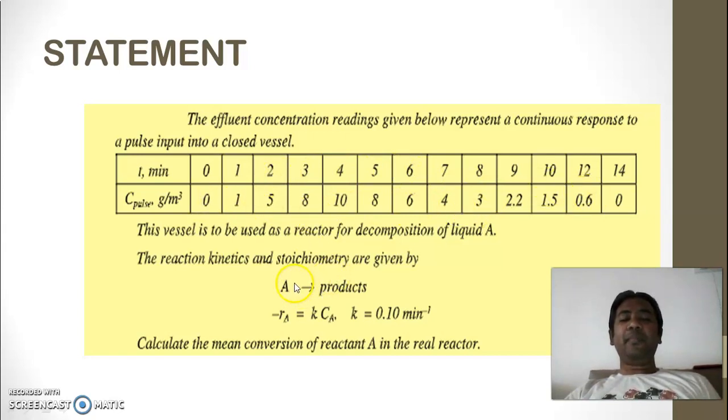So the reaction is A giving product, rate is K into CA, K is 0.1 per minute. And we want to calculate mean conversion of reactant A in the real reactor.